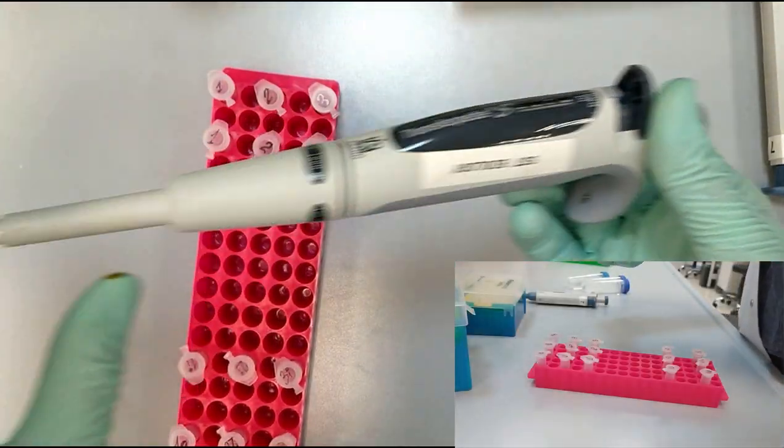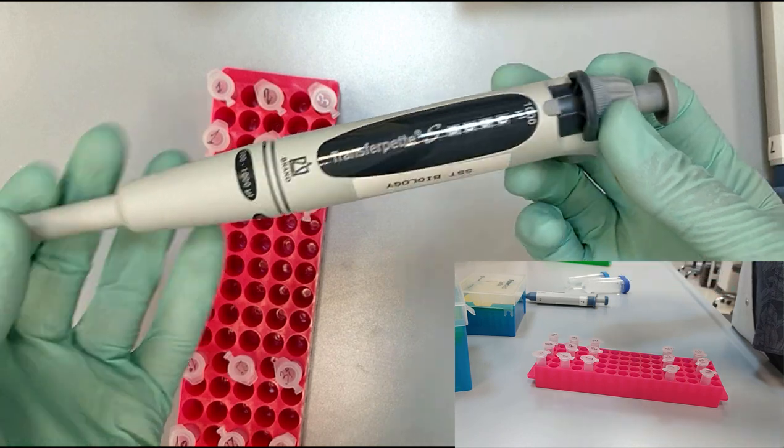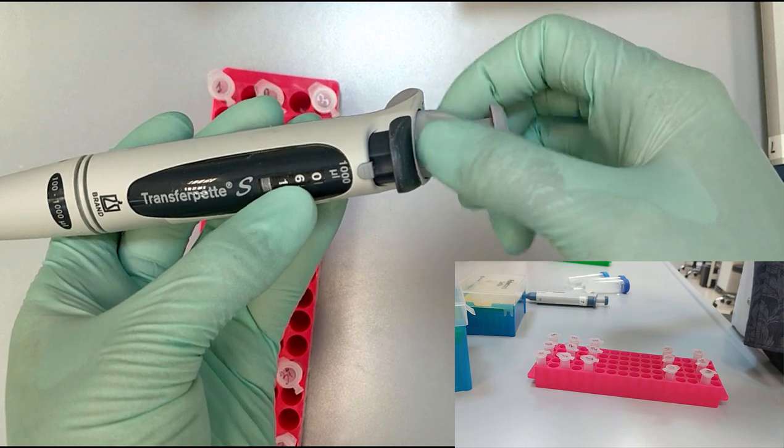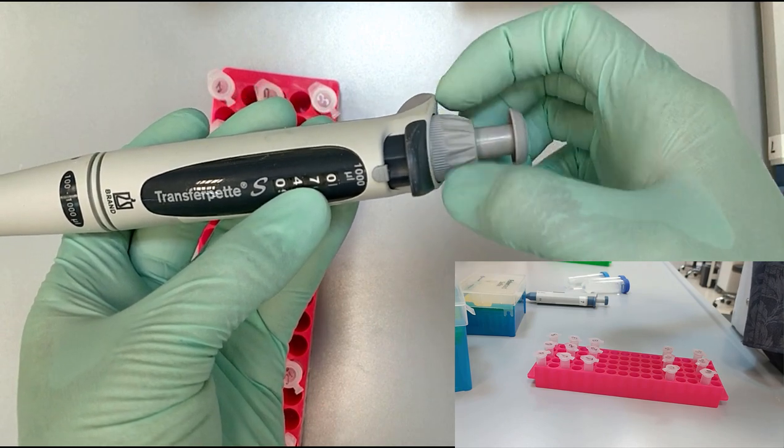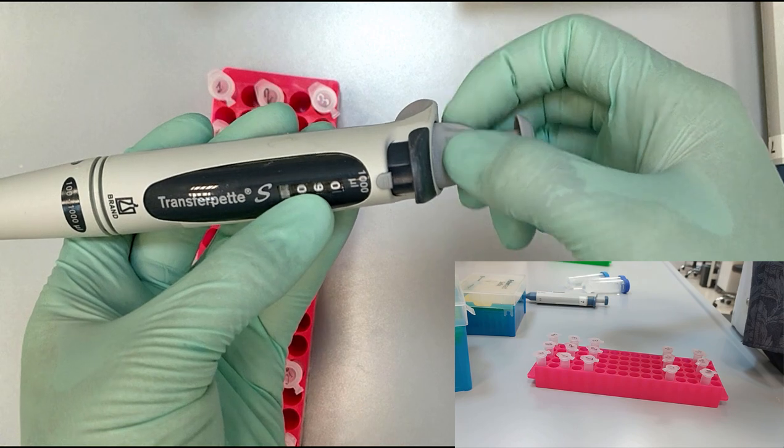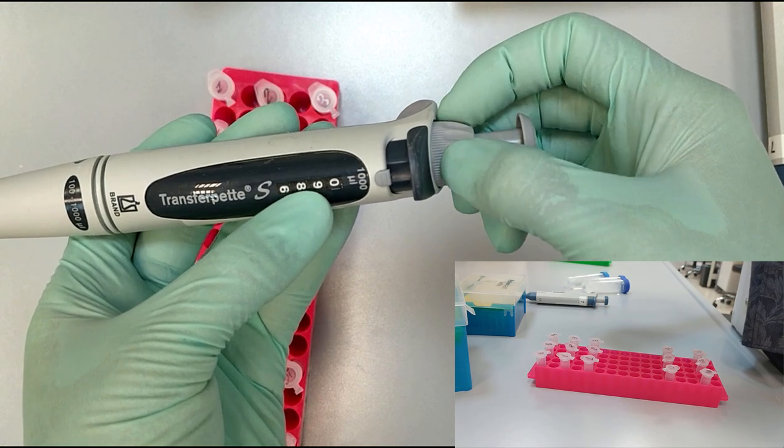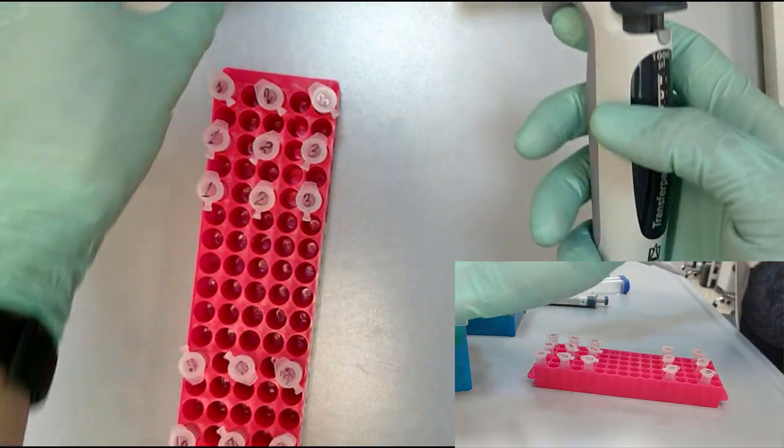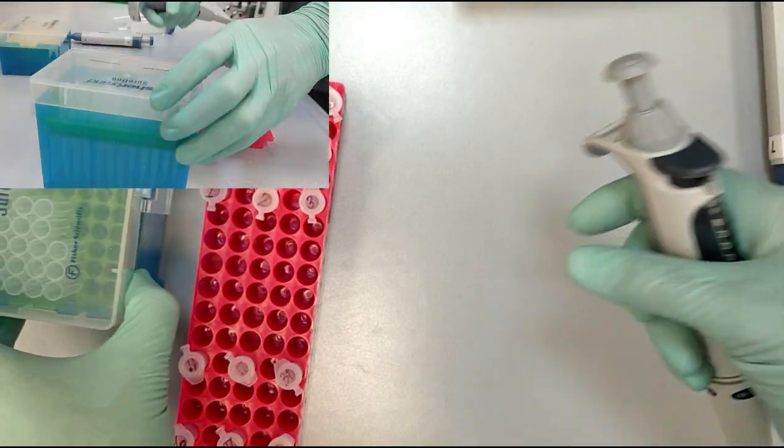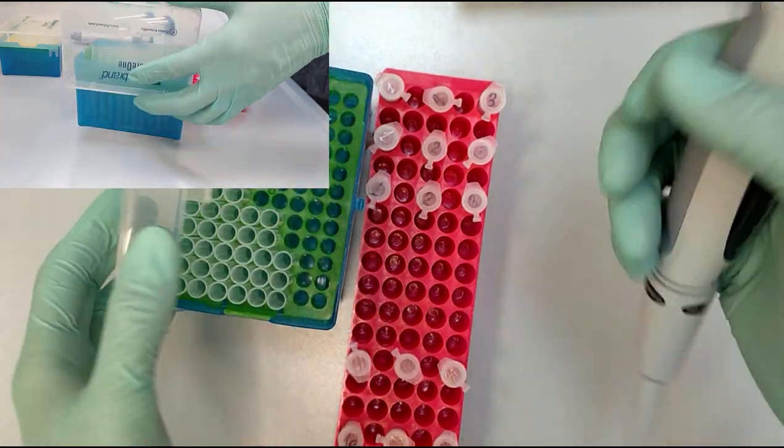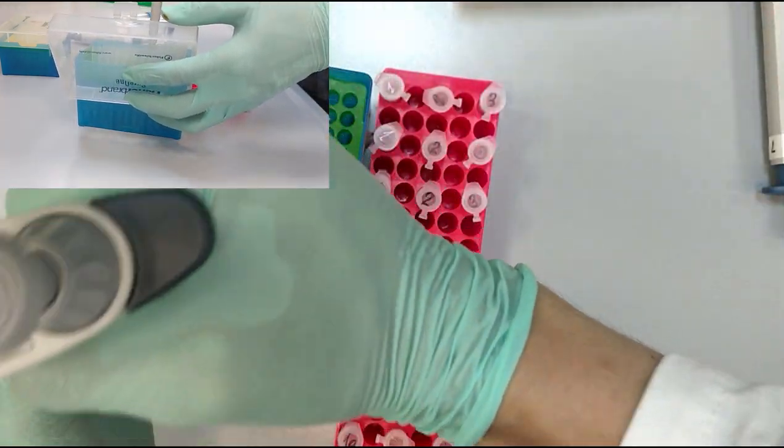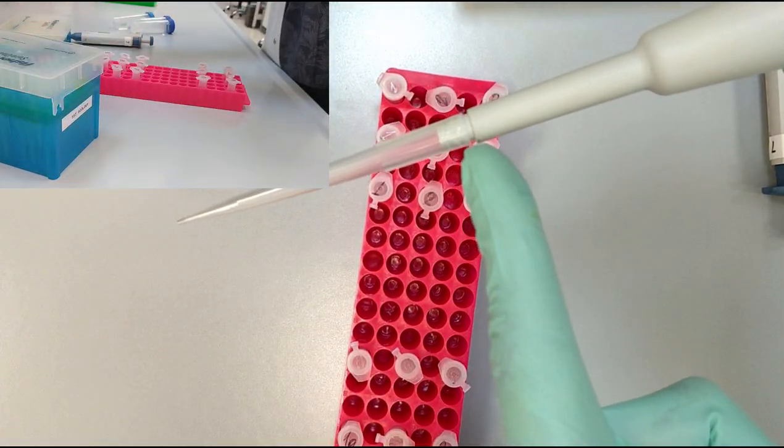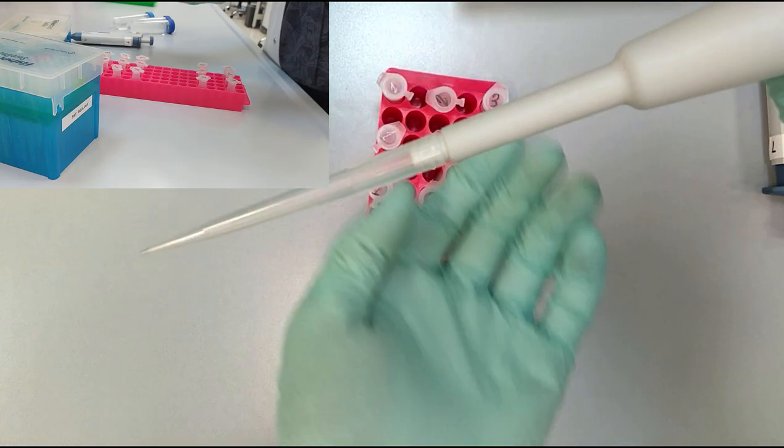We take the one milliliter pipette and set it to 1,000 microliters. We press on the tip so that it is in its place, and here you can see it.